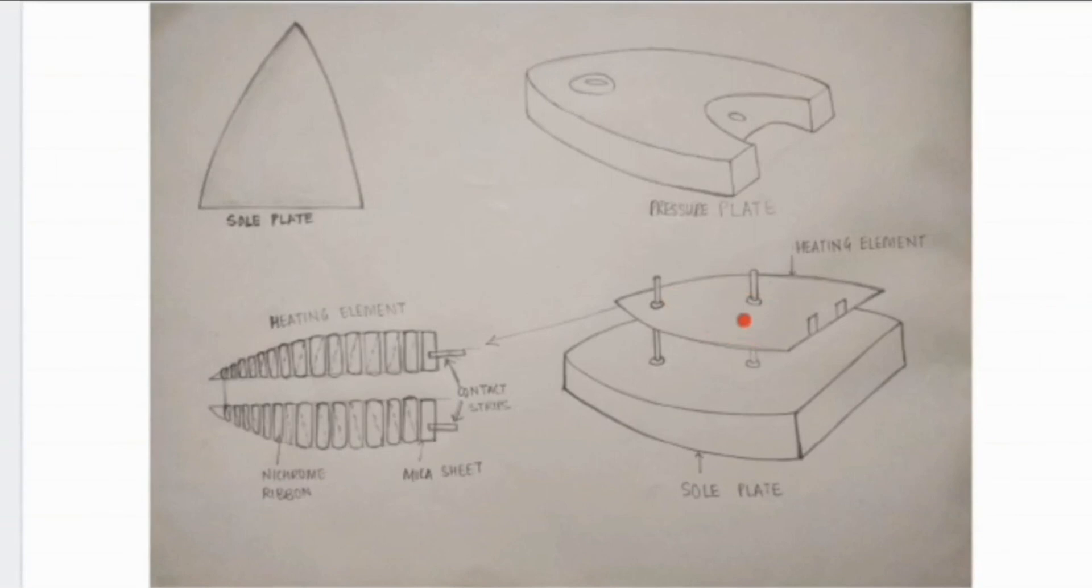This is the heating element of the electric iron. The heating element consists of nichrome wire. Heating element is placed between the top that is the pressure plate and base plate that is the sole plate.